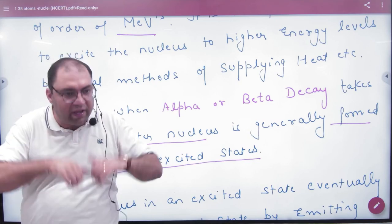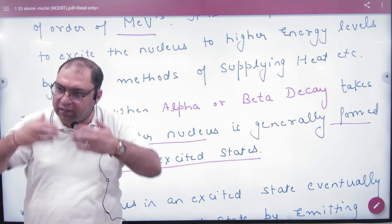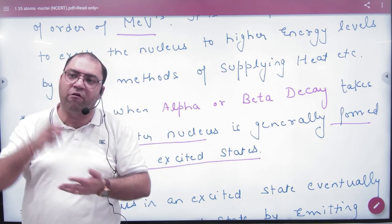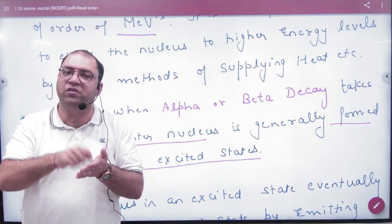What will they do? They will try to come to lower energy and release their energy in the form of photons, in the form of EM radiation. We call them gamma rays.